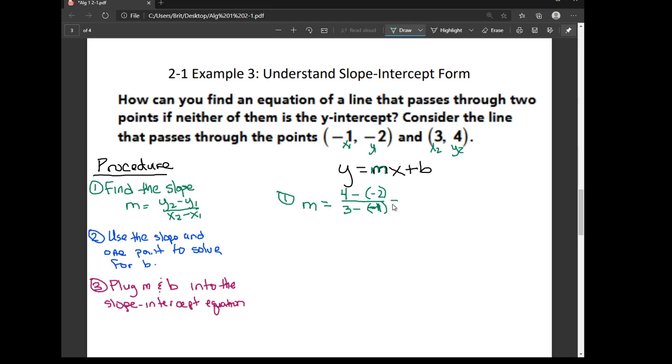So remember when you subtract a negative, that's the same thing as adding. So this is saying 4 plus 2, which is 6, and 3 plus 1, which is 4, and then go ahead and reduce your fraction because both of those are divisible by 2. So this is my m value, my slope.